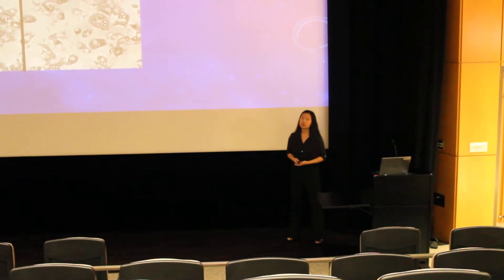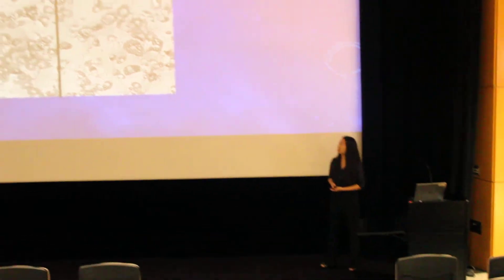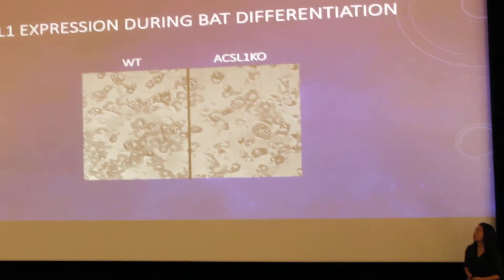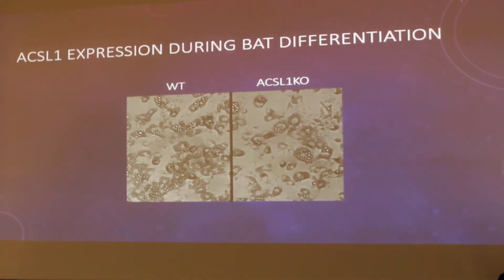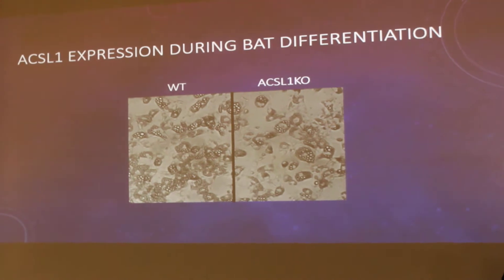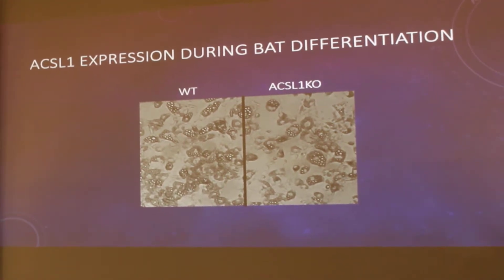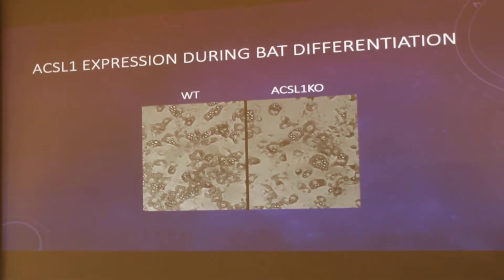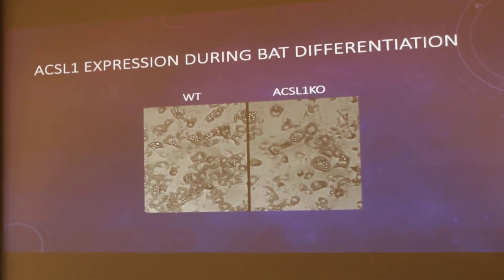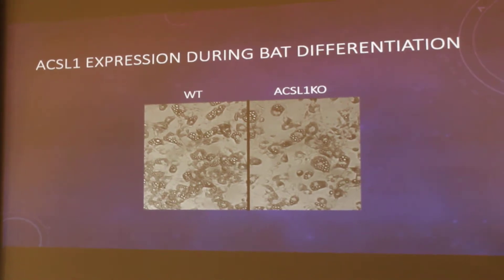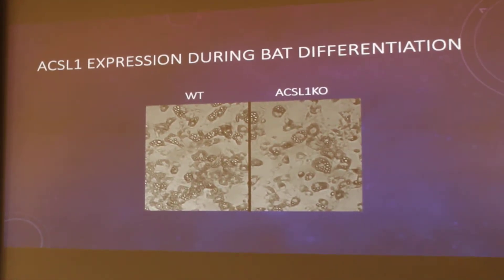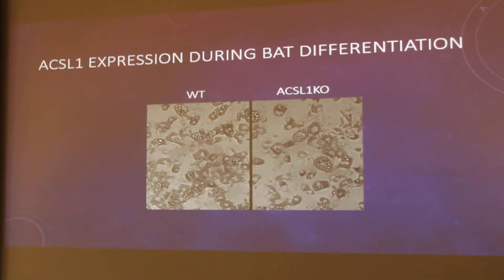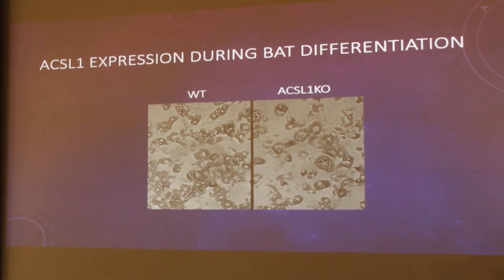Here is a visual representation of brown adipose tissue differentiation. On the left is the wild type, or control, and on the right is with ACSL1 knocked out or removed. You can see that there is significantly less brown adipose in the ACSL1 knockout group, which again shows the importance of ACSL1 in brown adipose tissue differentiation.